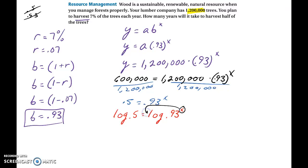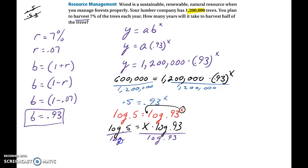Bring the x out front using the power rule: log(0.5) equals x times log(0.93). Then divide each side by log(0.93), and x is approximately 9.55 years — about nine and a half years until half the trees are harvested. That's it for this video; there's one more video and then we're done with this section.